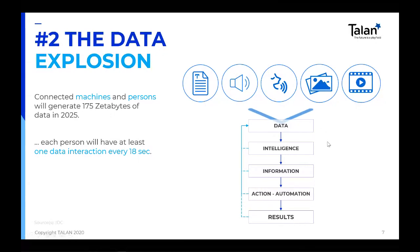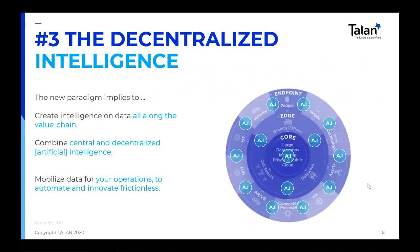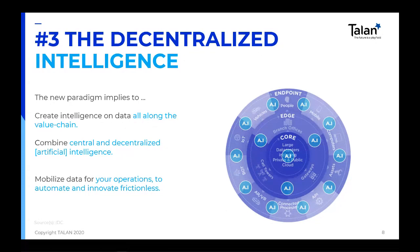Trend three corresponds to the decentralization of intelligence, all along the value chain, and this is a major change. More and more devices or applications integrate AI, and therefore your company needs now to have a holistic view of these intelligences to best leverage them. Nonetheless, a central intelligence is still needed to pilot everything and maintain control. With this decentralization of intelligence, producing just reports nowadays becomes more and more useless.